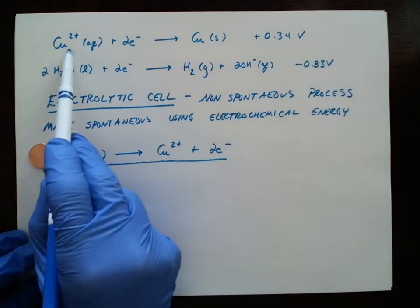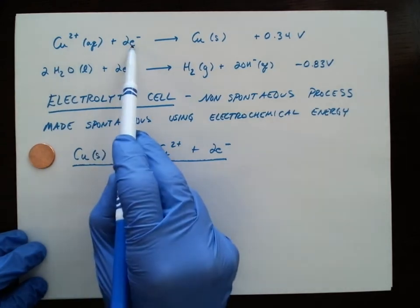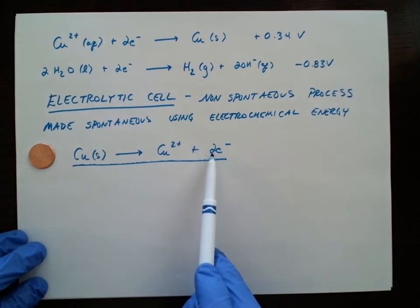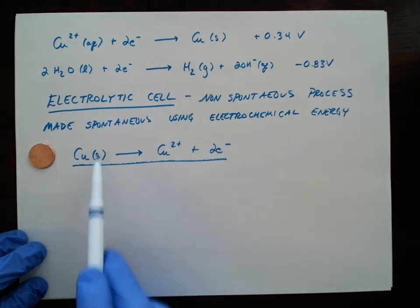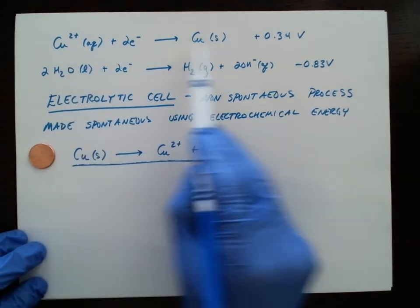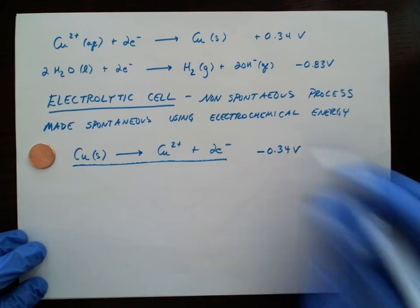So I've got copper 2, which is on this side, and two electrons, which is on this side, going to solid copper, which is on the opposite side. So because I flipped this reaction, I better flip the sign, negative 0.34 volts.